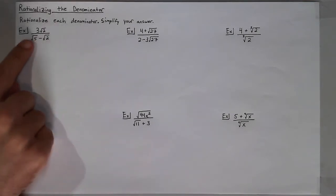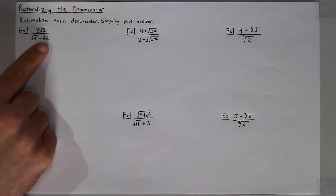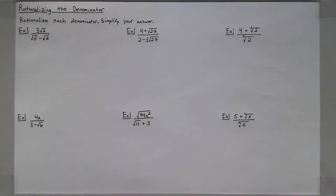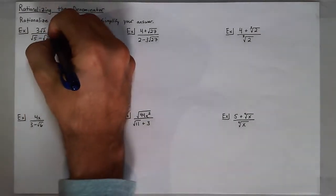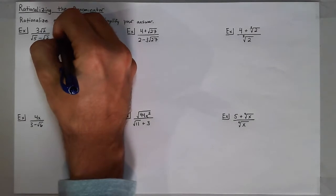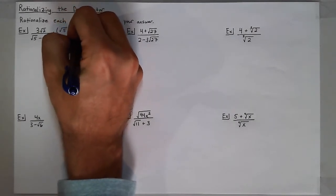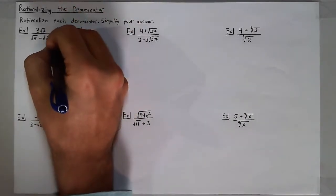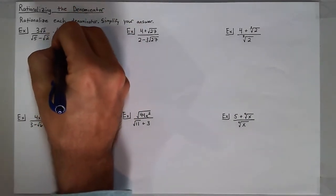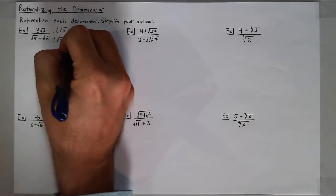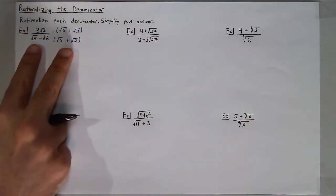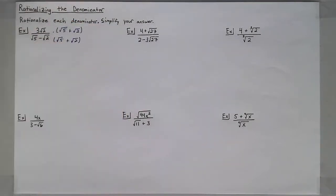To get rid of this square root of 5 and the square root of 2 in the denominator, I will multiply the numerator and denominator by its conjugate, which would be the square root of 5 plus the square root of 2, just changing the sign in between.